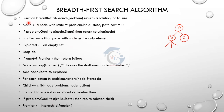The BFS algorithm: function breadth-first search with problem returns a solution or failure. We create a node with state equal to problem.initial_state and path cost equal to 0. One node has state information — root node and goal node. If we initialize the root node, path cost is 0.